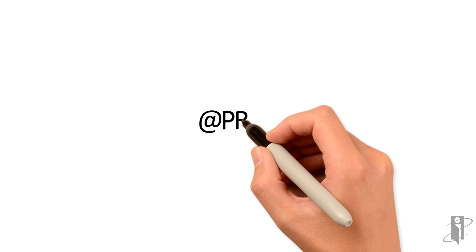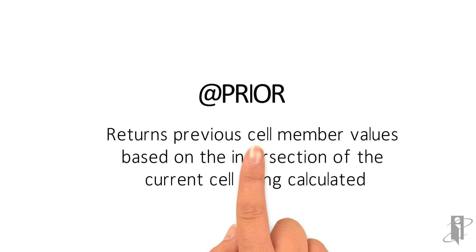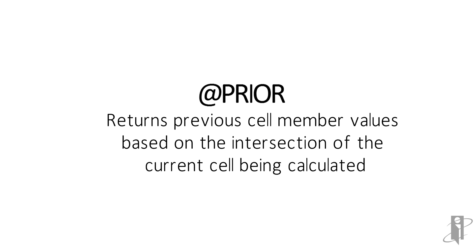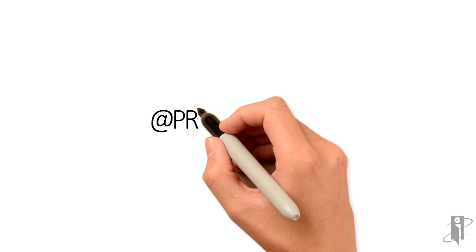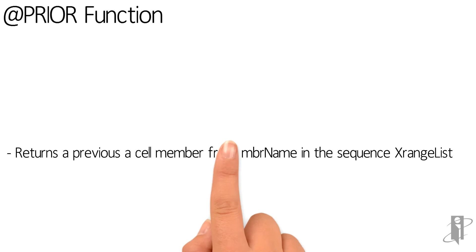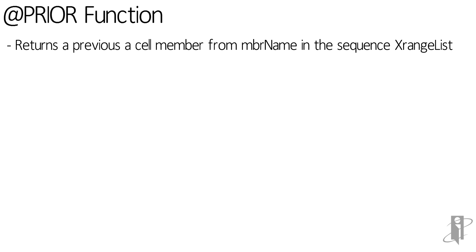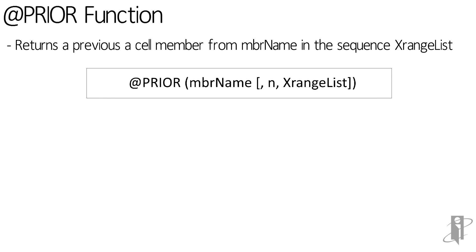The Prior function returns the previous cell member values based on the intersection of the current cell being calculated. It returns the nth previous cell member's value from member name in the Sequence X range list, with all other dimensions assuming the same members as the current member being calculated. The Prior function works only within the designated range and with level 0 members.